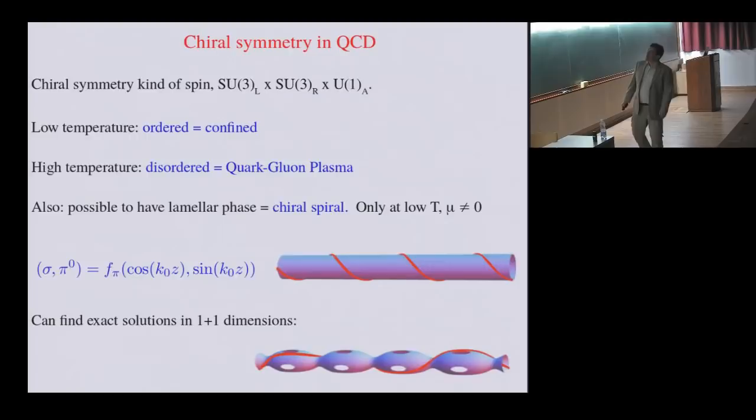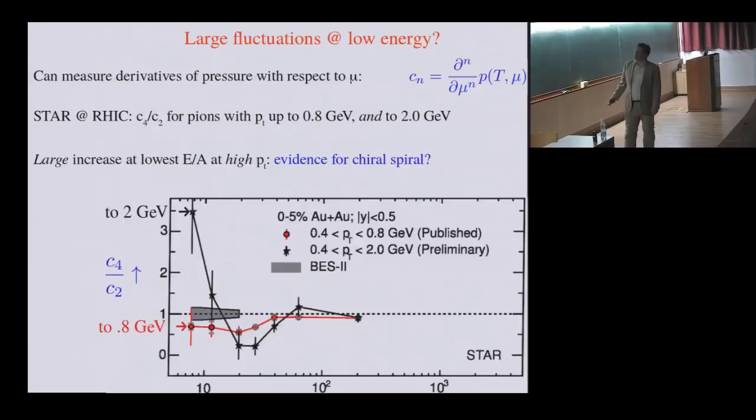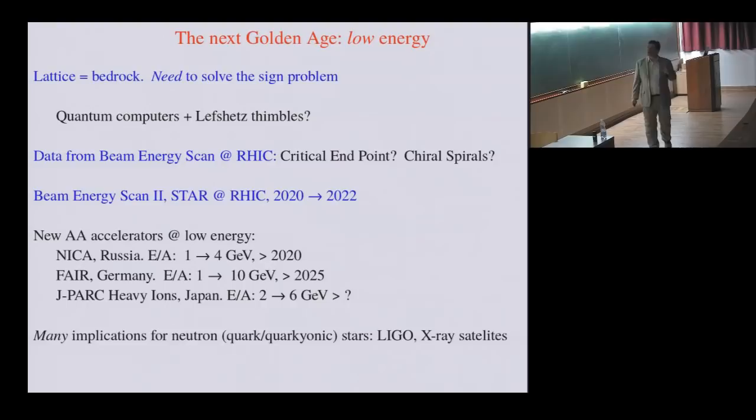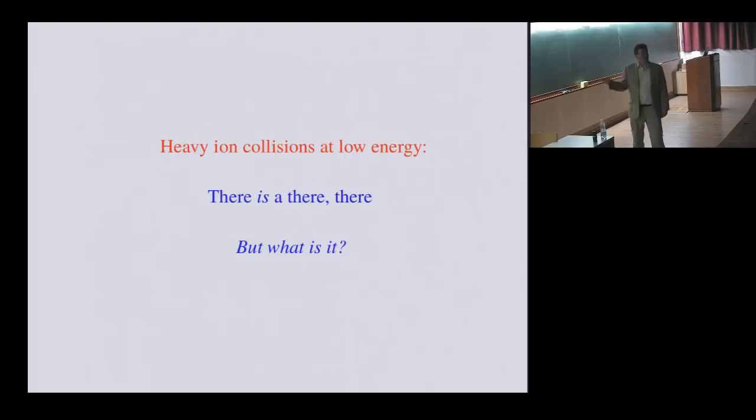Let me skip ahead to allow time for questions. There are experiments that are going on both at Brookhaven and at other accelerators that will measure nuclear collisions at lower energies. There's the beam energy scan at RHIC that will go on from 2020 to 2022. There are colliders in Russia called NICA, in Germany, FAIR, maybe in Japan. It will have direct implications for the equation of state of neutron or quark stars, which will be measurable in gravitational wave observatories and X-ray satellites. So, to quote Gertrude Stein, who in 1890 said about Oakland, California, there's no there there. At low energies, I believe there's a there. I flipped through some very exciting experimental evidence. It will surely be a problem that will occupy us for some time.